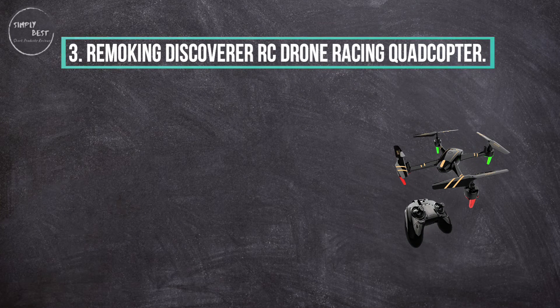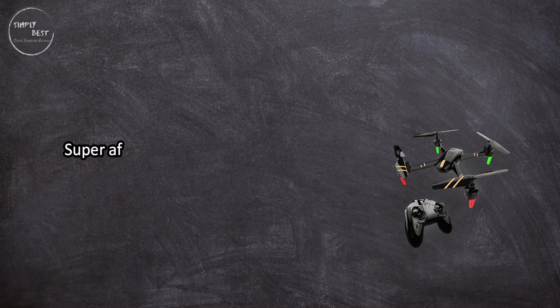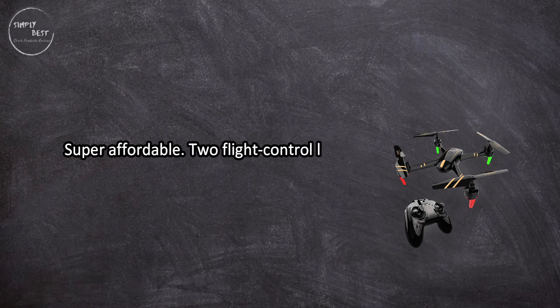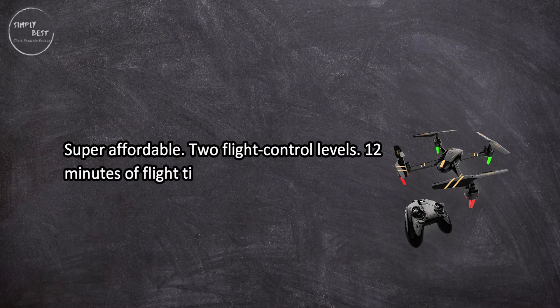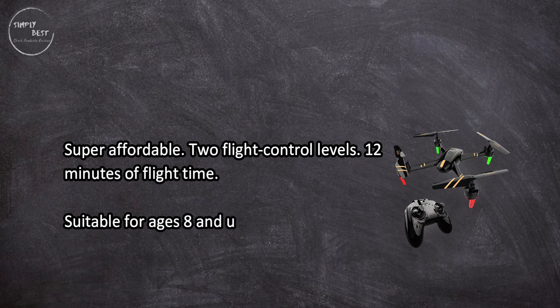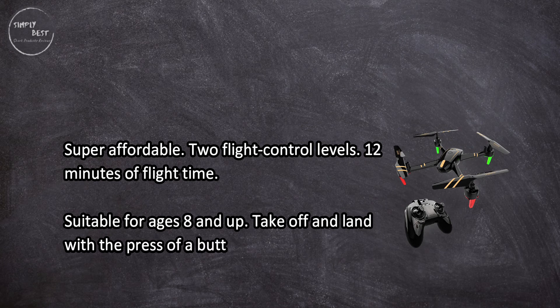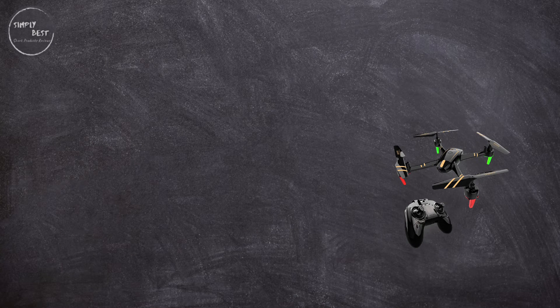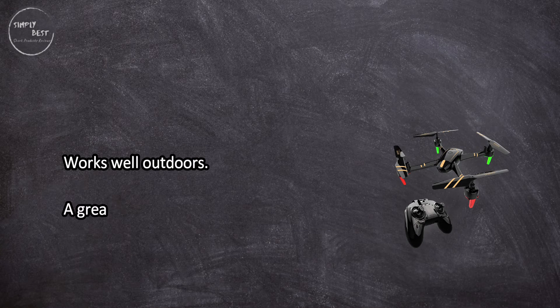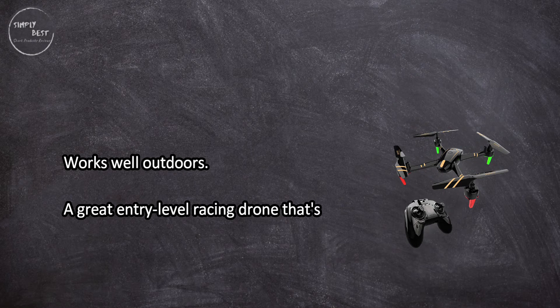Super affordable, two flight control levels, 12 minutes of flight time, suitable for ages 8 and up. Take off and land with the press of a button. Works well outdoors. A great entry-level racing drone that's perfect for beginners who want to try one out before making a big investment.